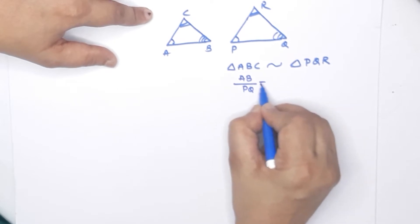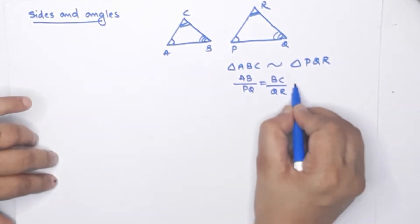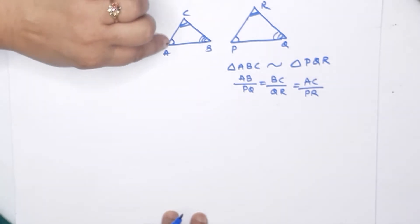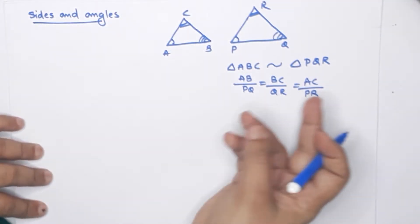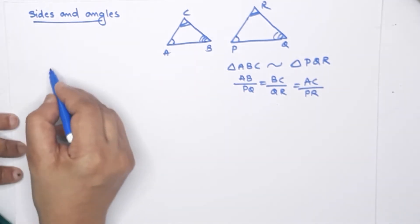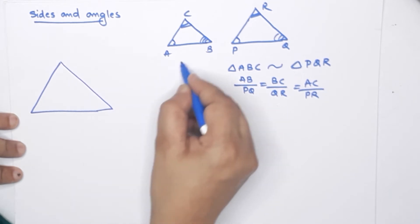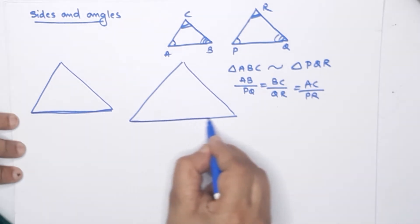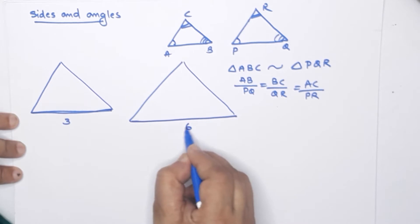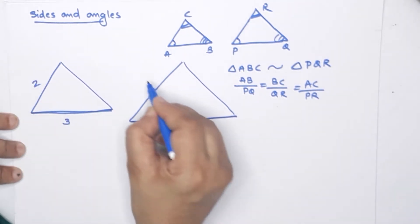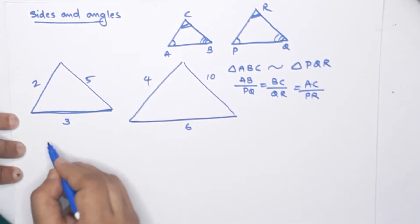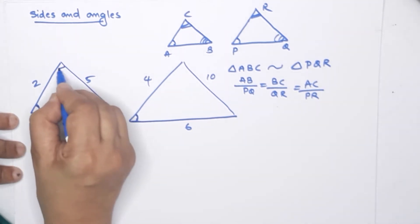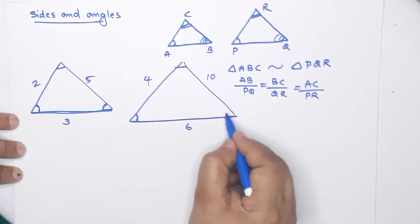AB divided by PQ equals BC divided by QR equals AC divided by PR. Sides are proportional — that is what we call this topic. The angles are equal and sides are proportional. For example, here is a triangle and another triangle. This side is proportional in scale: one side is 3 and the other is 6, one side is 2 and the other is 4, one side is 5 and the other is 10. The sides are scaled proportionally, so automatically the angles are equal.